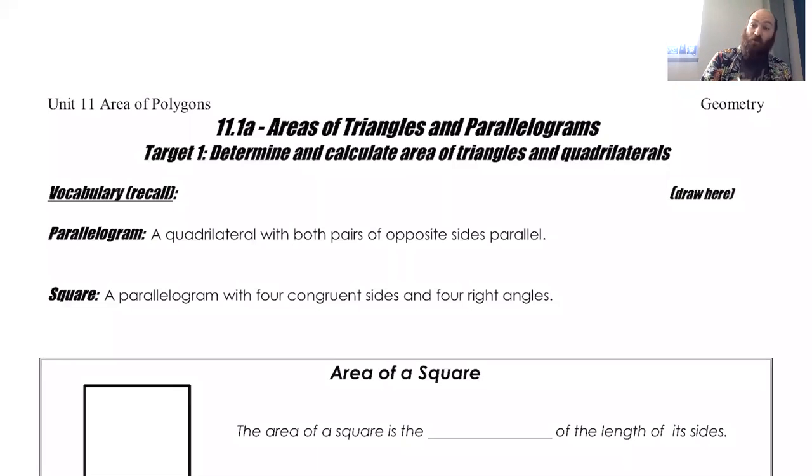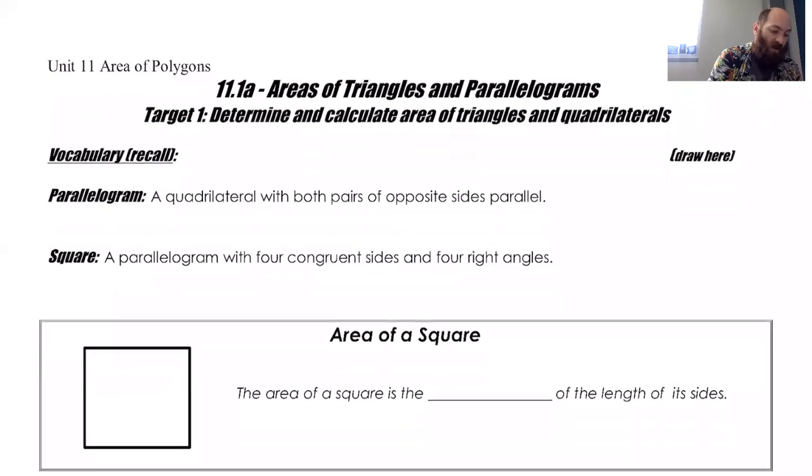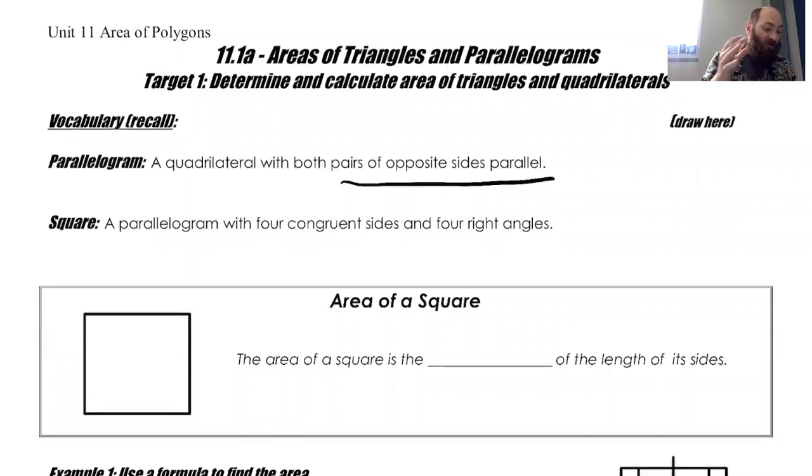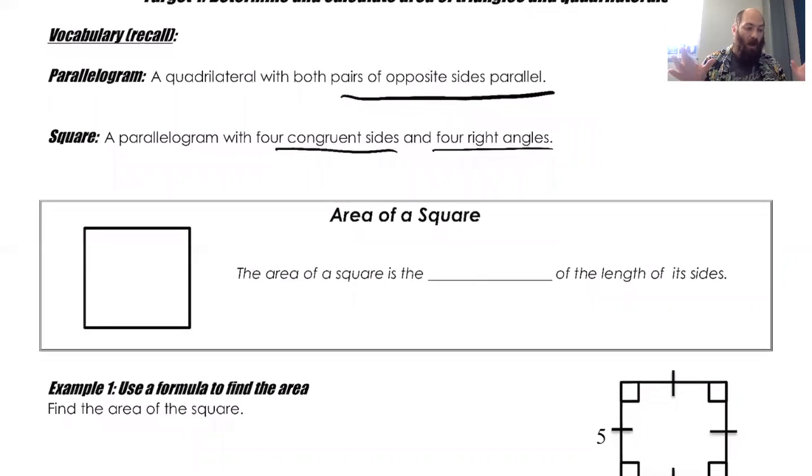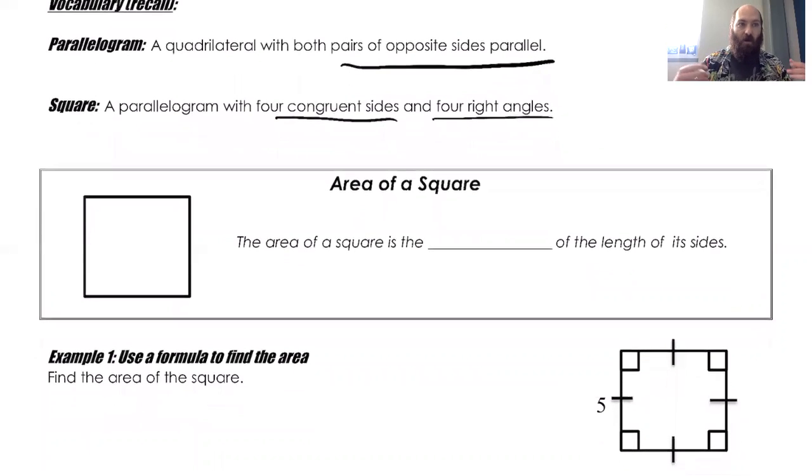Alright, so a little bit of recall. Parallelograms, that's what we talked about last unit, that's a quadrilateral with both pairs of opposite sides parallel. And we also have a square, a parallelogram with four congruent sides and four congruent angles. That's important because when we get to our formulas, we need to make sure we understand what makes what in terms of some of our vocab terms.